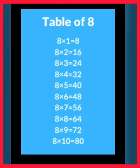Let's revise table of 8 one last time. 8 ones are 8. 8 twos are 16. 8 threes are 24. 8 fours are 32. 8 fives are 40. 8 sixes are 48. 8 sevens are 56. 8 eights are 64. 8 nines are 72. And 8 tens are 80.